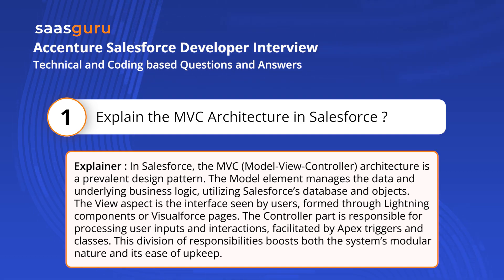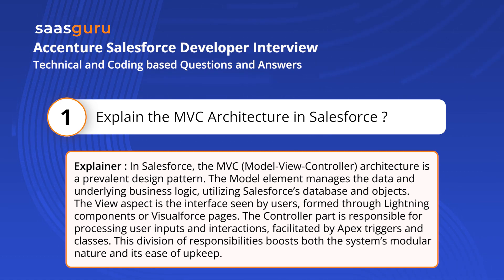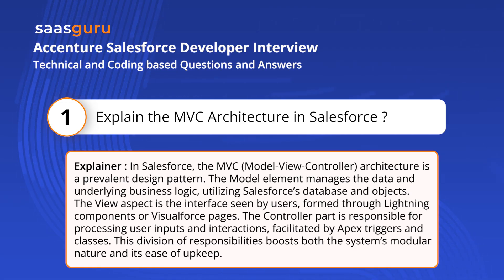The Model element manages the data and underlying business logic, utilizing Salesforce's database and objects. The View aspect is the interface seen by users, formed through Lightning components or Visualforce pages. The Controller part is responsible for processing user inputs and interactions, facilitated by Apex triggers and classes. This division of responsibilities boosts both the system's modular nature and its ease of upkeep.